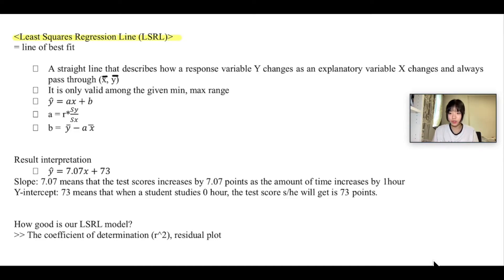Least square regression line, or shortened as LSRL, is the same as the line of best fit. But it is not the same as goodness of fit.